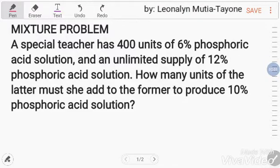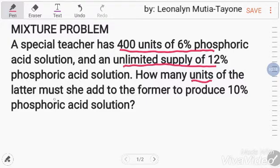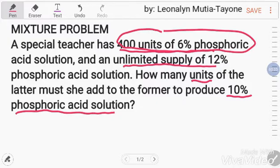Let's answer this mixture problem. A special teacher has 400 units of 6% phosphoric acid solution and an unlimited supply of 12% phosphoric acid solution. How many units of the latter must she add to the former to produce 10% phosphoric acid?